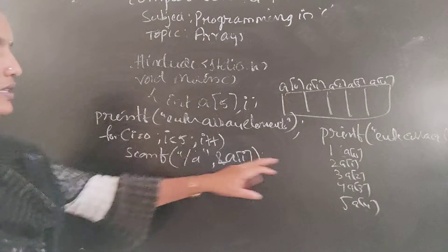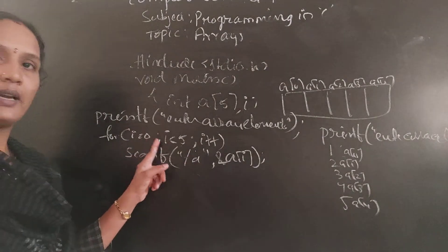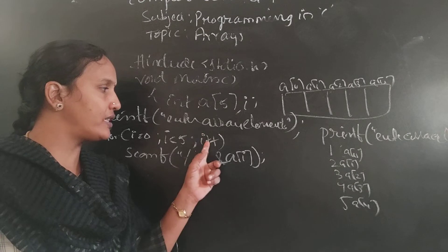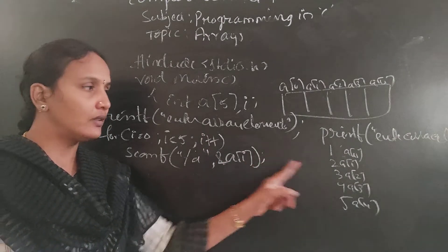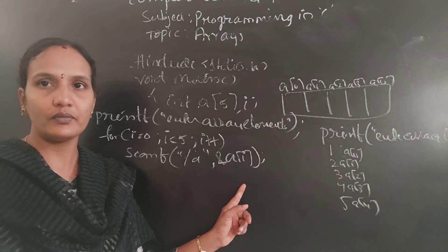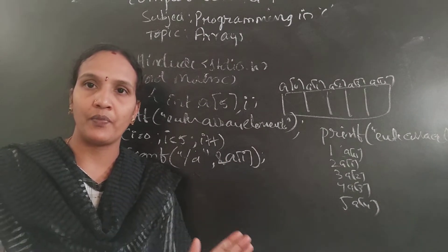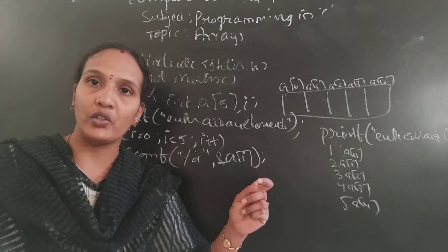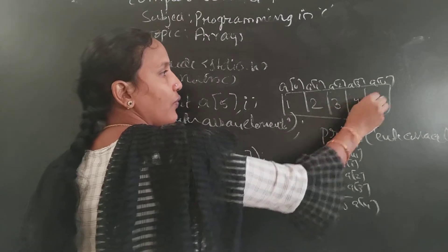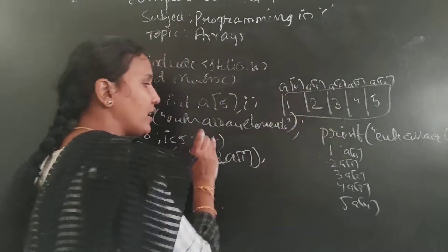When the user gives the value, the first value is stored in A of 0. i equals to 0, i less than 5, condition is true — the first element is stored in A of 0. Next, i is incremented — the second element is stored in A of 1. Again i is incremented — the third element is stored in A of 2. And so on for A of 3 and A of 4. Values given after compilation are not fixed — whatever the user gives is stored in the corresponding index using the for loop.